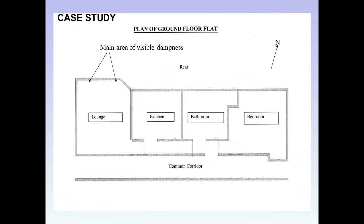A case study: this was a problem in a flat in London. The flat was part of a large block and was on the ground floor. The problem area was in the lounge on the north-facing wall. The case revolved around a claim that the building fabric was damp, with the plaintiff blaming dampness in the walls for causing loss of clothing and so forth.